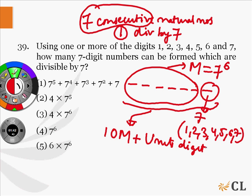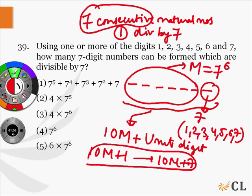So, we can say that there will be 7 consecutive numbers starting from 10m plus 1 to 10m plus 7. And in these 7 consecutive natural numbers, there will be only one number that will be divisible by 7.